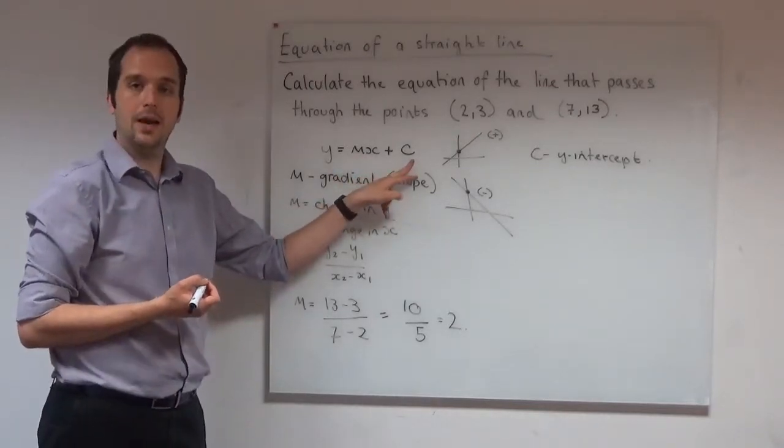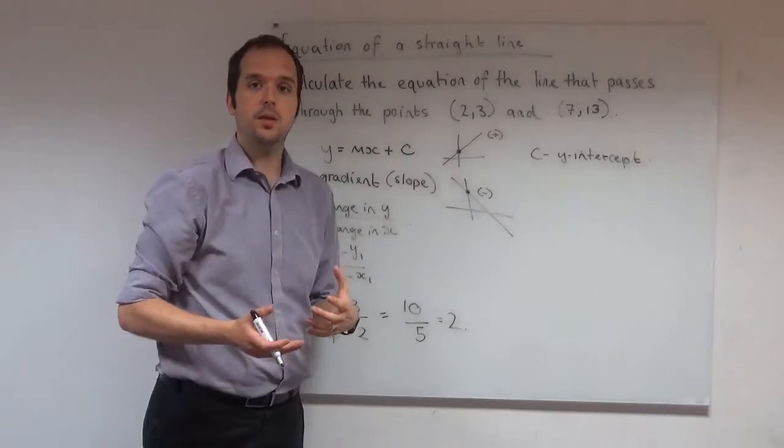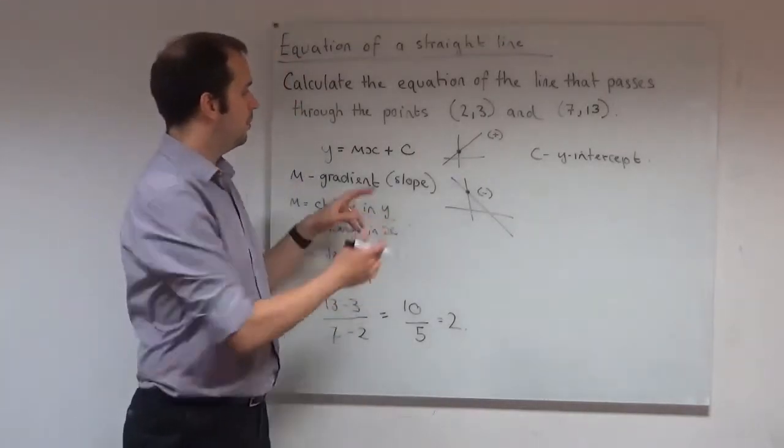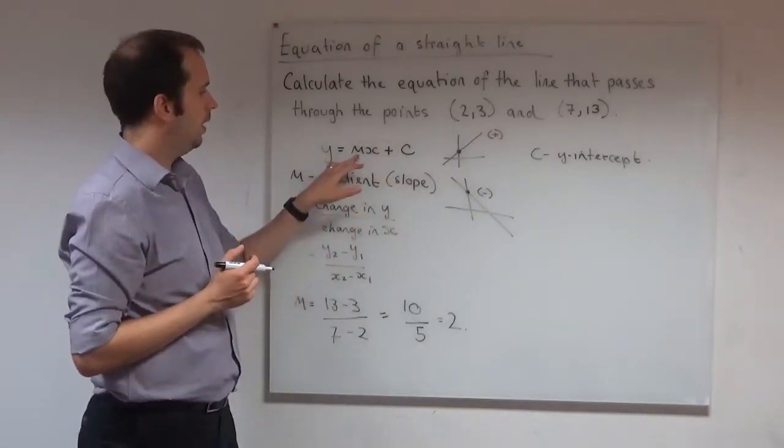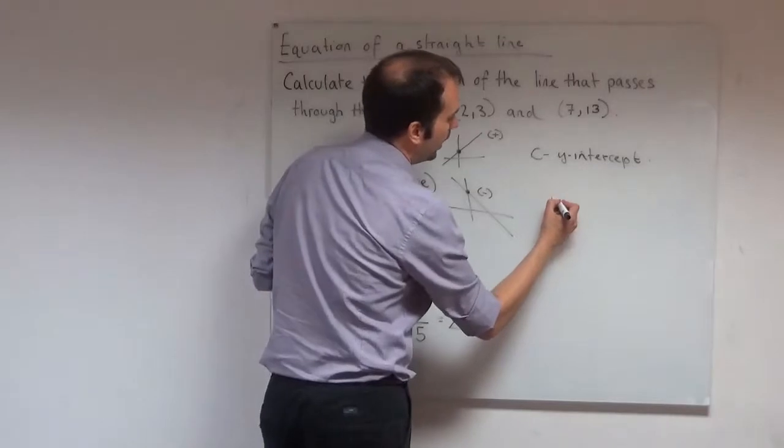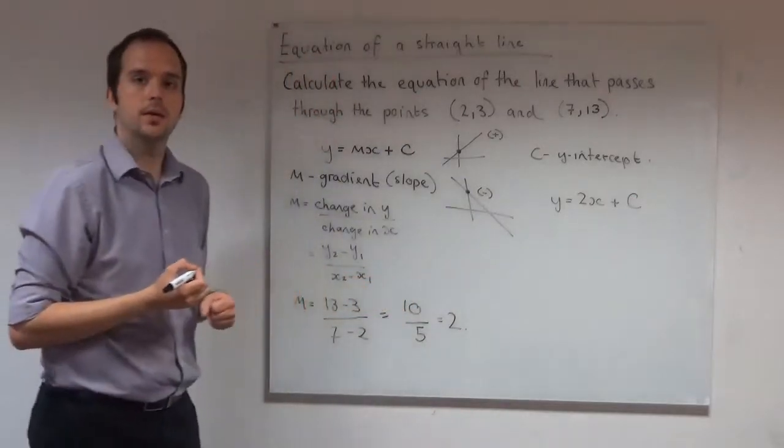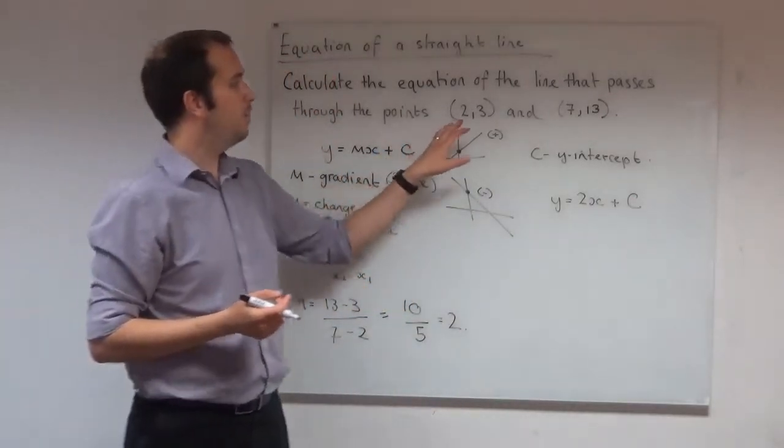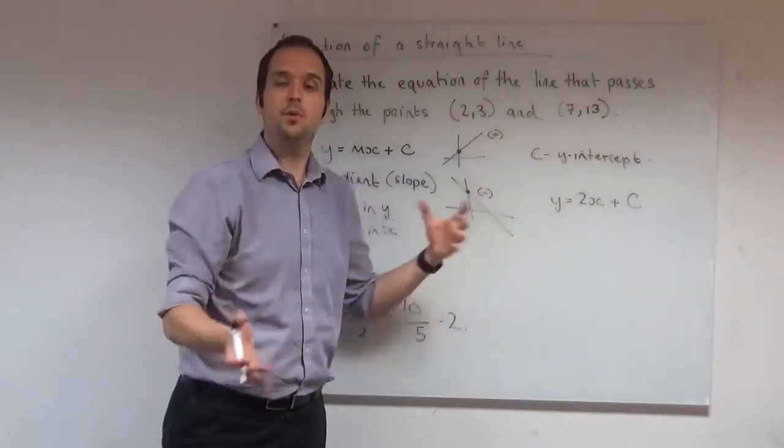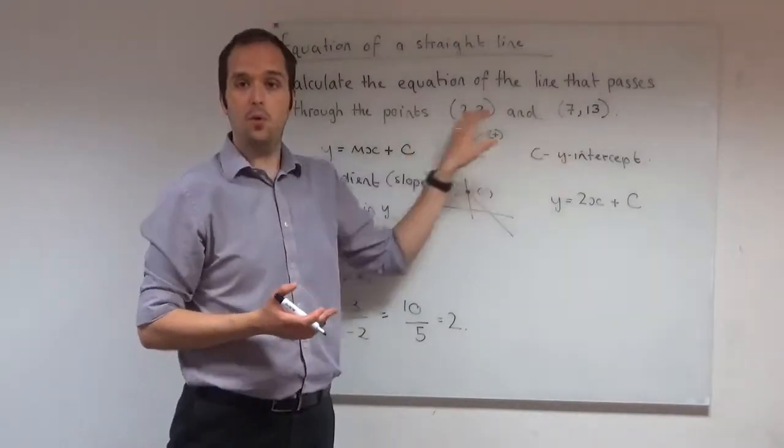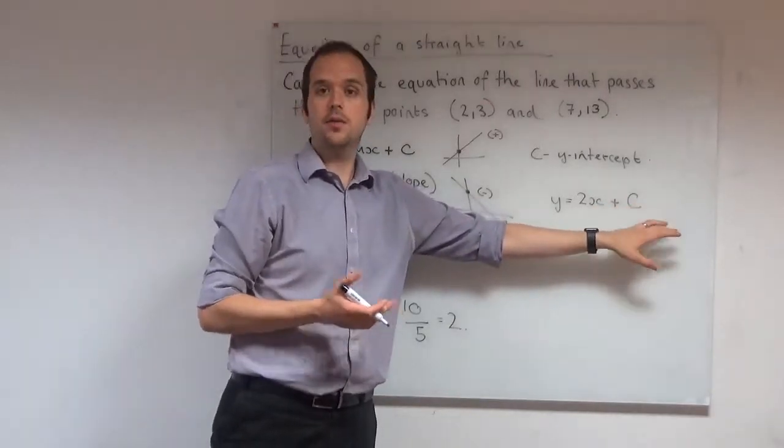The only thing I need to work out now is my y-intercept, my constant here. Again, there's lots of different ways of working that out. But the way I'm going to do it is by substituting values into the line equation. I know my m so I can write down that y is equal to 2x plus c. I can now pick this coordinate or this coordinate. It doesn't matter. We'll get the same answer whichever one we plug in. And I'm going to substitute them into here and then rearrange to find what c is.